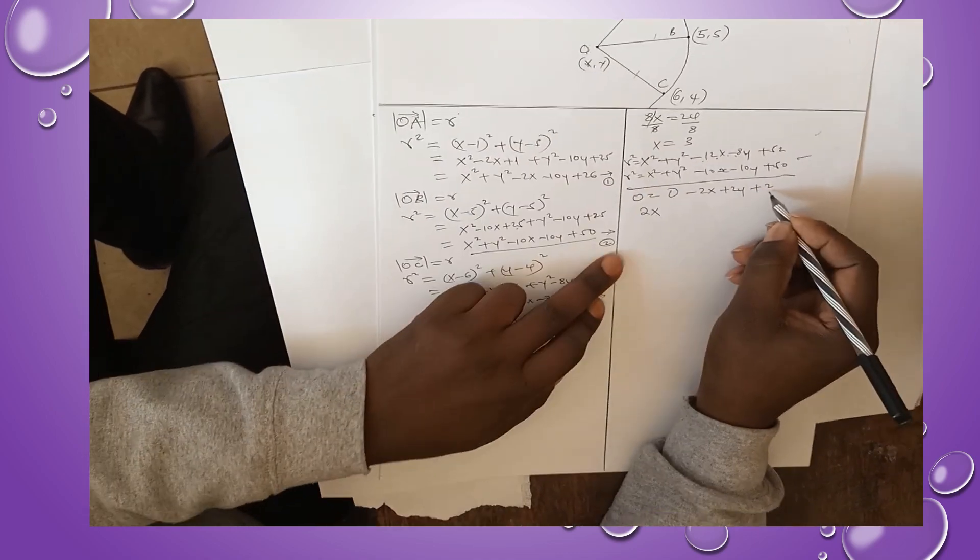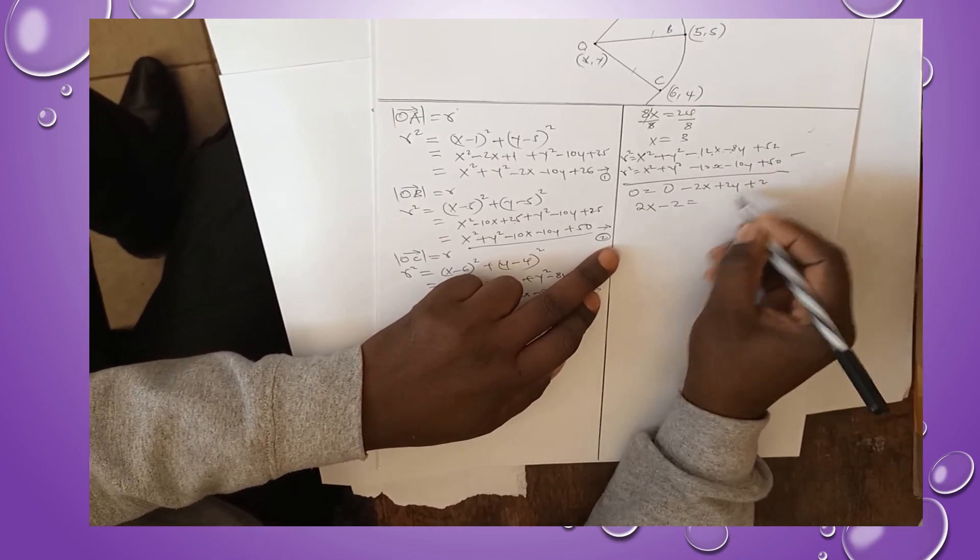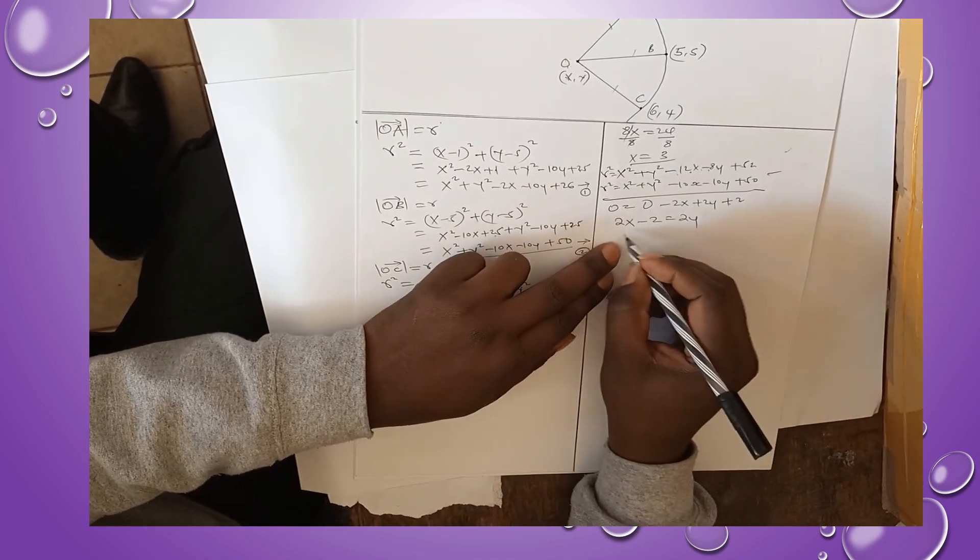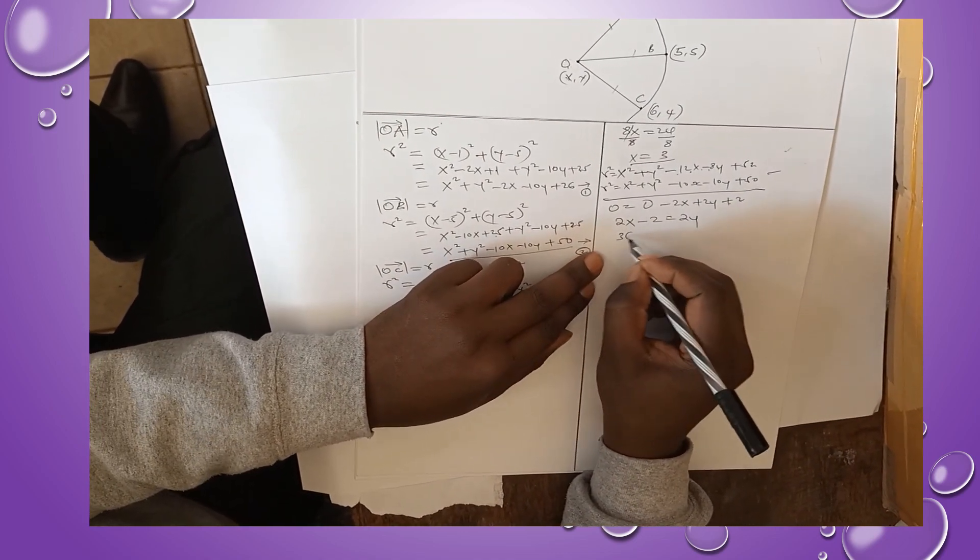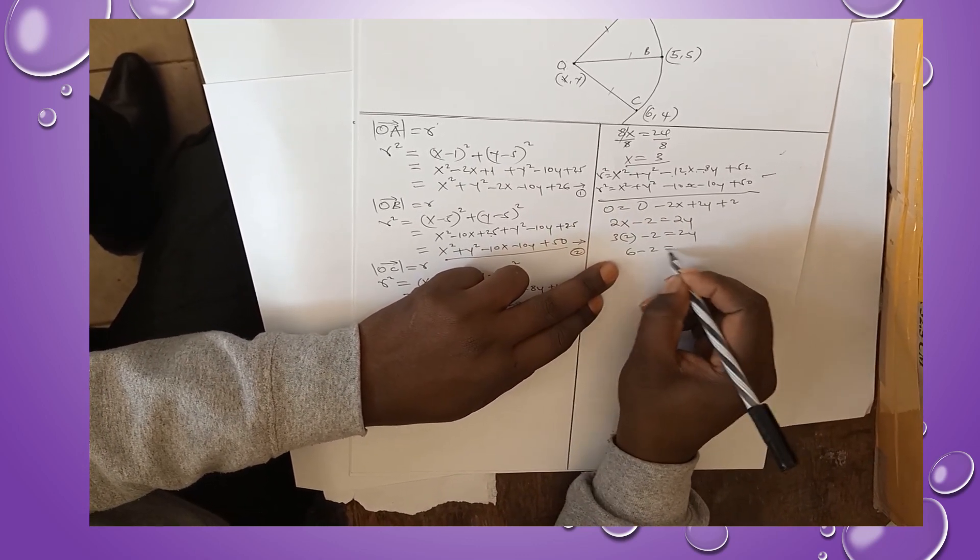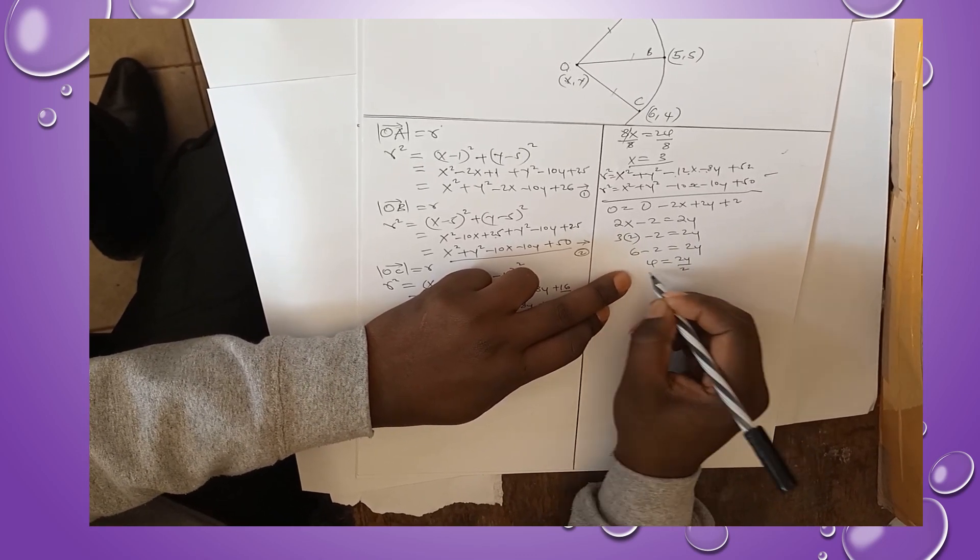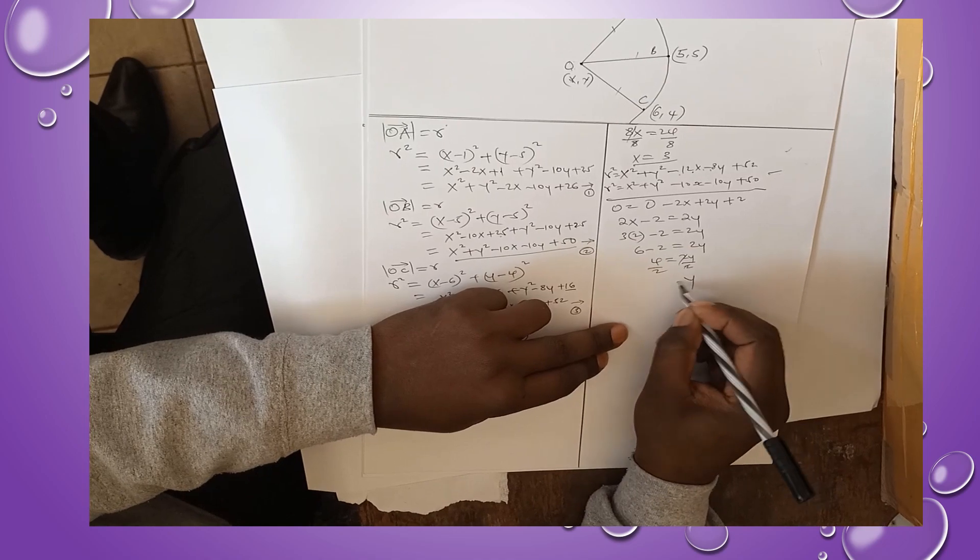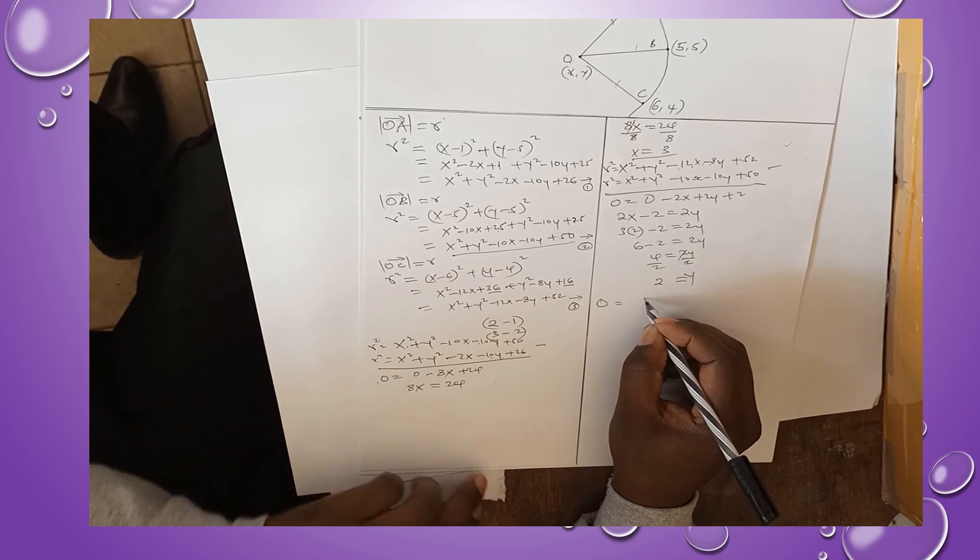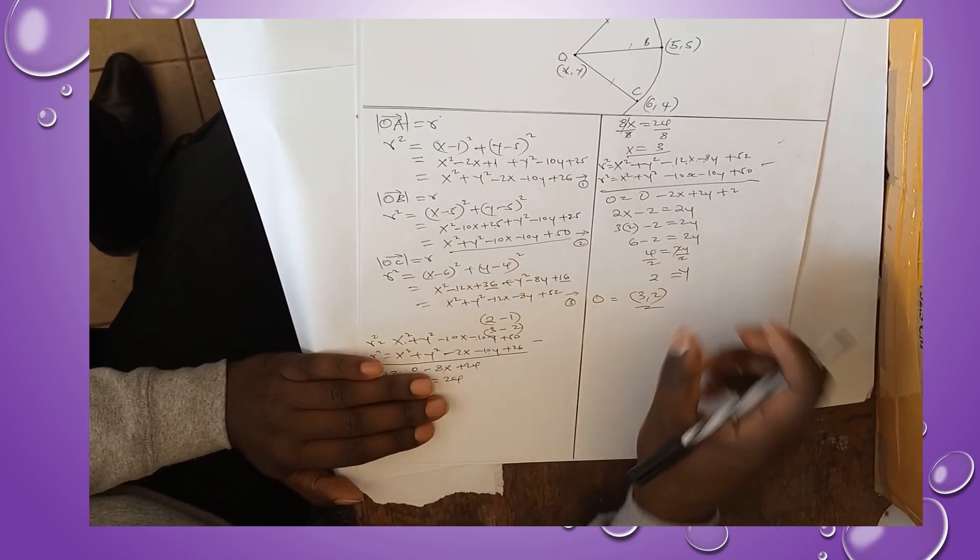We get 2x - 2 = 2y. Remember we have gotten the value of x as 3. We can substitute there and say 3 × 2 - 2 = 2y. This is 6 - 2 = 2y, therefore this gives us 4 = 2y. Divide by 2, our value of y becomes 2. Our center O will have the coordinates (3, 2).